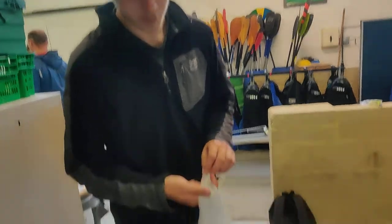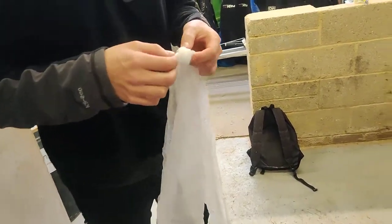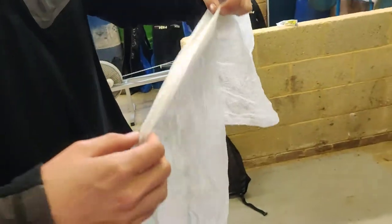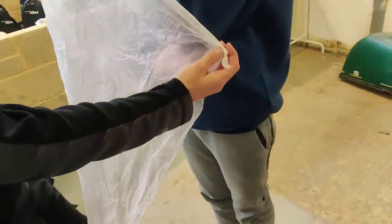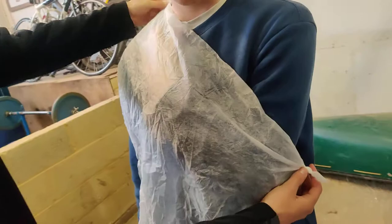So the same as last time we're going to tie a small knot in the corner of the triangular bandage. We're then going to put the knot by the elbow just behind and then pass the corner over the top of the shoulder.